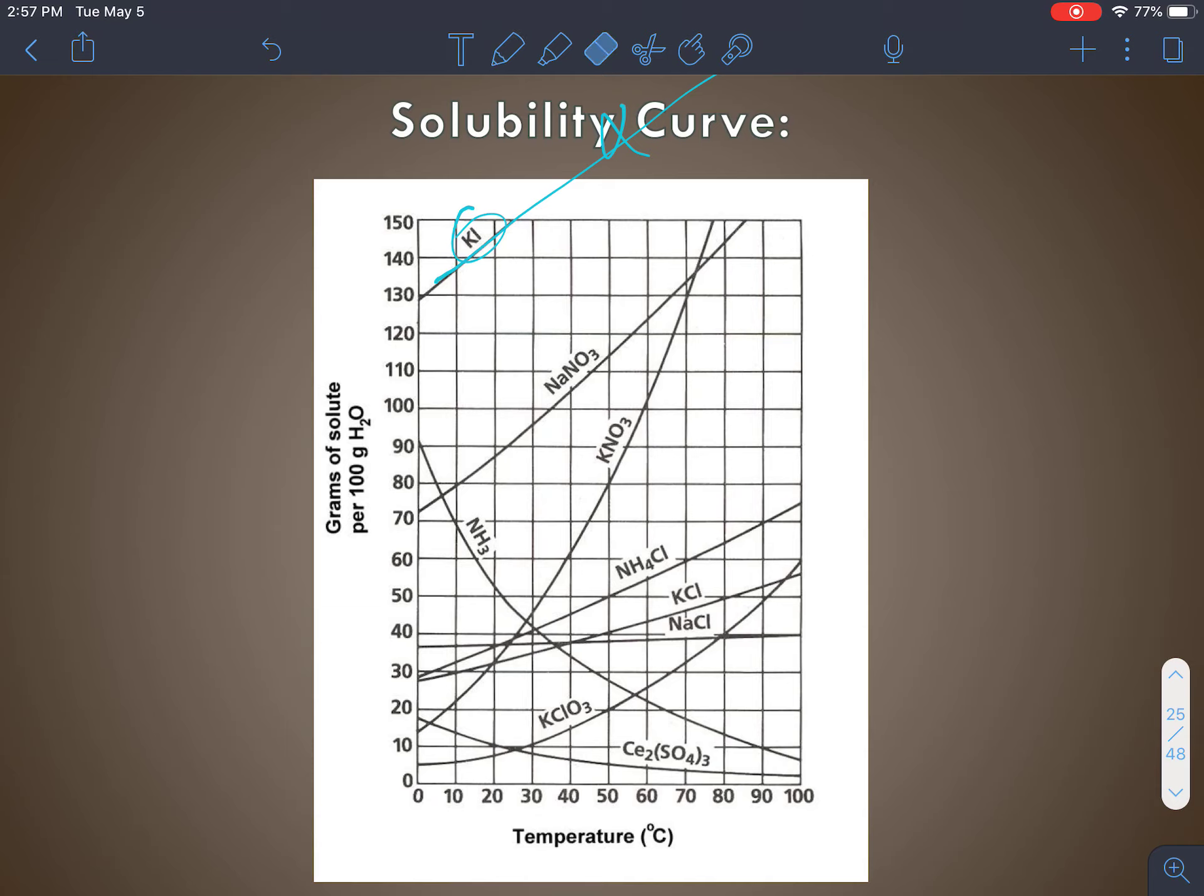Maybe I would ask you guys which substance has the least solubility or is the least soluble at 10 degrees. So then we're looking here down here at 10 degrees and that would be potassium chlorate.